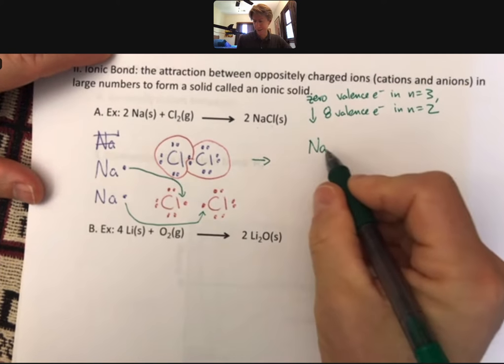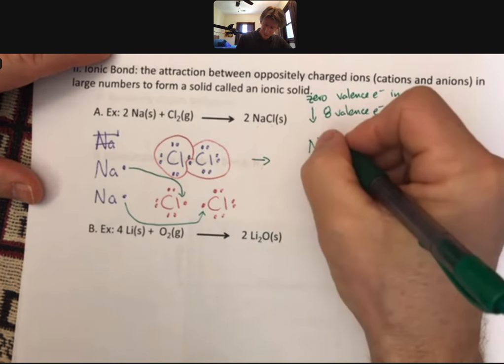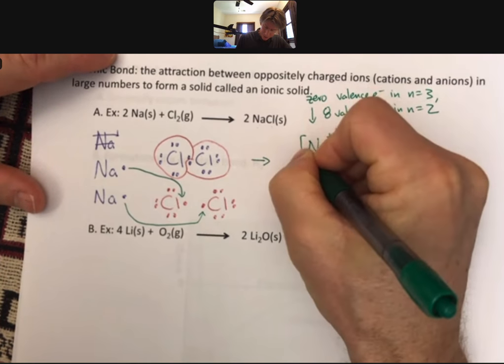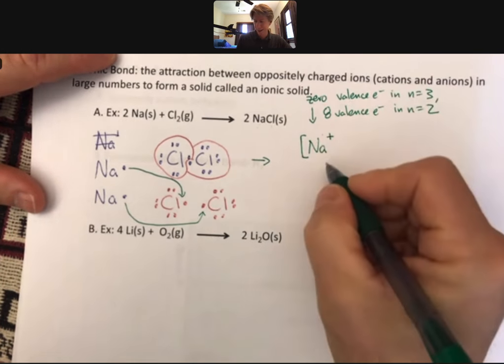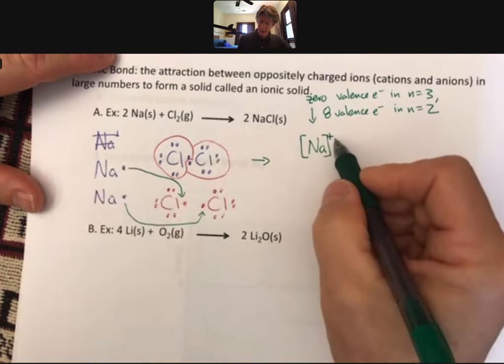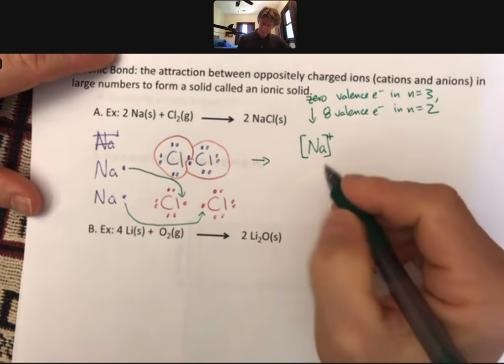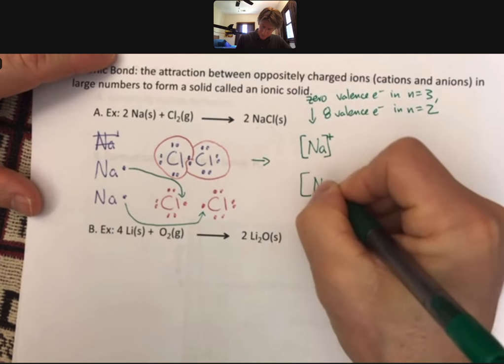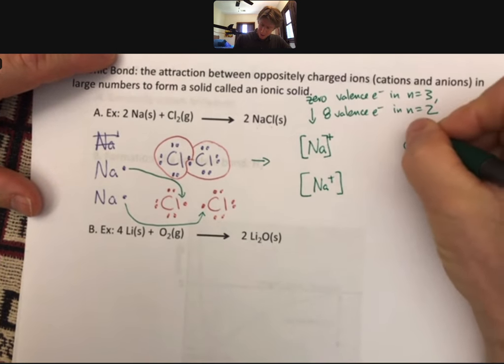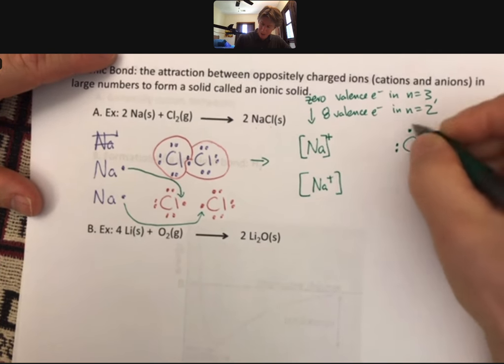Sometimes people just leave it like Na. Sometimes they put the eight electrons. Either way is fine with me, as long as you put the plus. This time we'll put it outside of the brackets, but it could go inside as well. We're going to have two of those, and two of these chloride ions, which now have eight electrons.